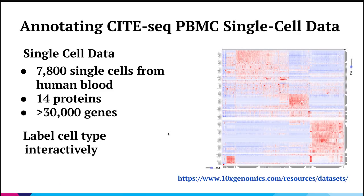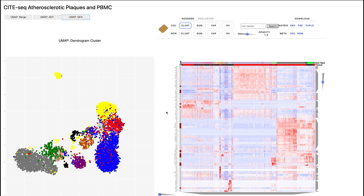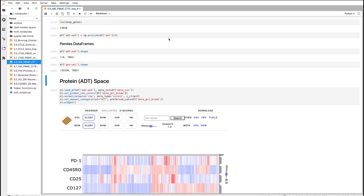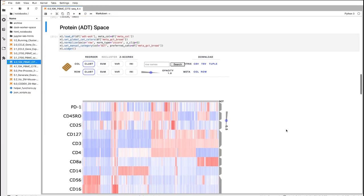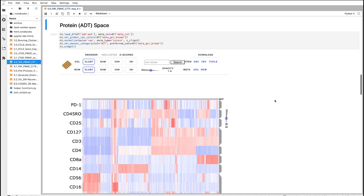The next example demonstrates how we can use ClusterGrammar to annotate some unlabeled data. In this dataset, it's a CITE-seq dataset where we're measuring 7,800 single cells — 14 proteins and over 30,000 genes. We're going to demonstrate how we can create two different linked views of the cells in those two different measurement spaces and go through and annotate those cells in an actual JupyterLab instance.